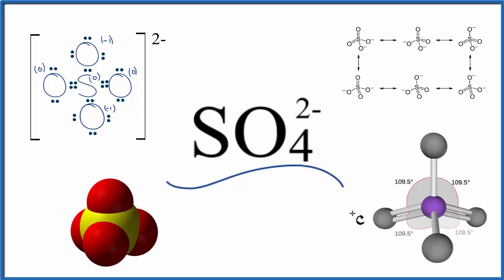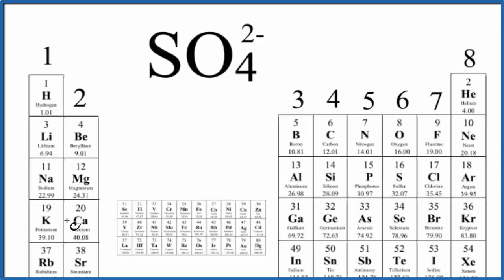So first thing we need to do, we need to count the valence electrons up for the sulfate ion. So we have our periodic table here, each group arranged by the number of valence electrons.